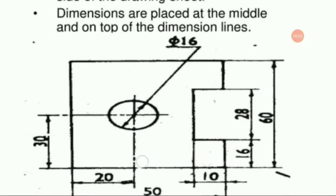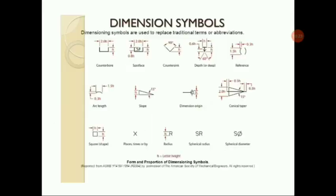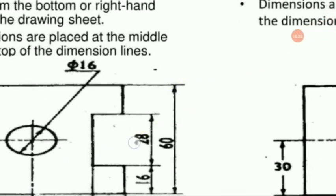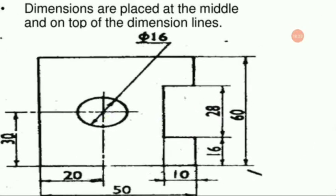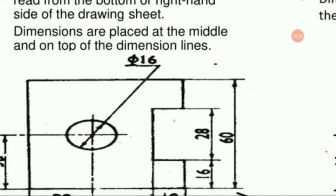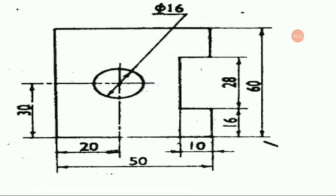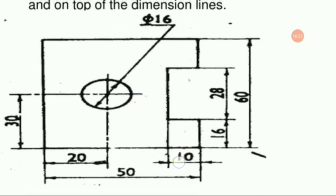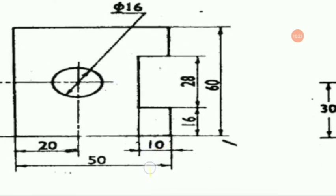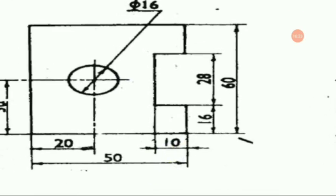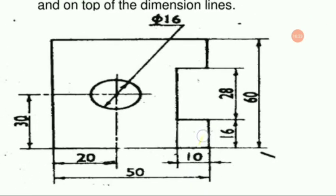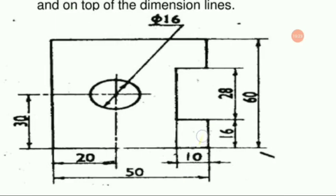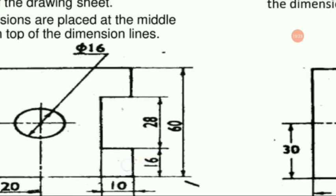This is the aligned type of dimensioning system. The diameter of the circle is given by phi 516, and other linear dimensions are also given in aligned form. The measurement is given over the line — at the top of the dimension line. That is the aligned system.